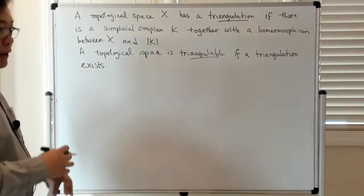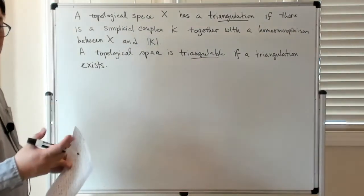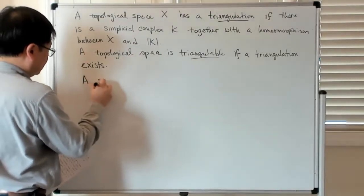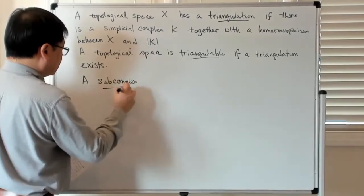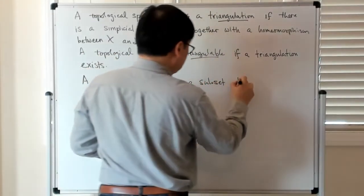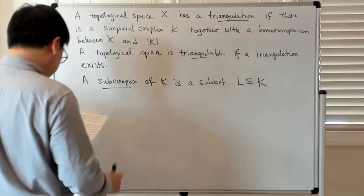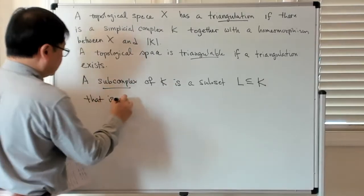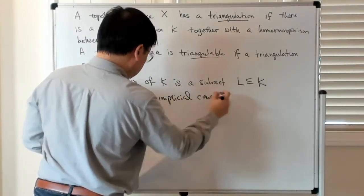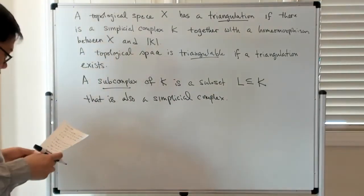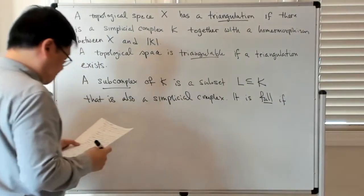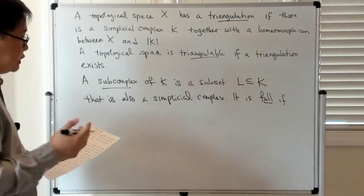We also want to look at subsets of the simplicial complex which are themselves simplicial complexes. We refer to such things as subcomplexes. A subcomplex of K is a subset L contained in K that is also a simplicial complex. We say that the subcomplex is full if it contains all the simplices in K that are spanned by vertices in L.